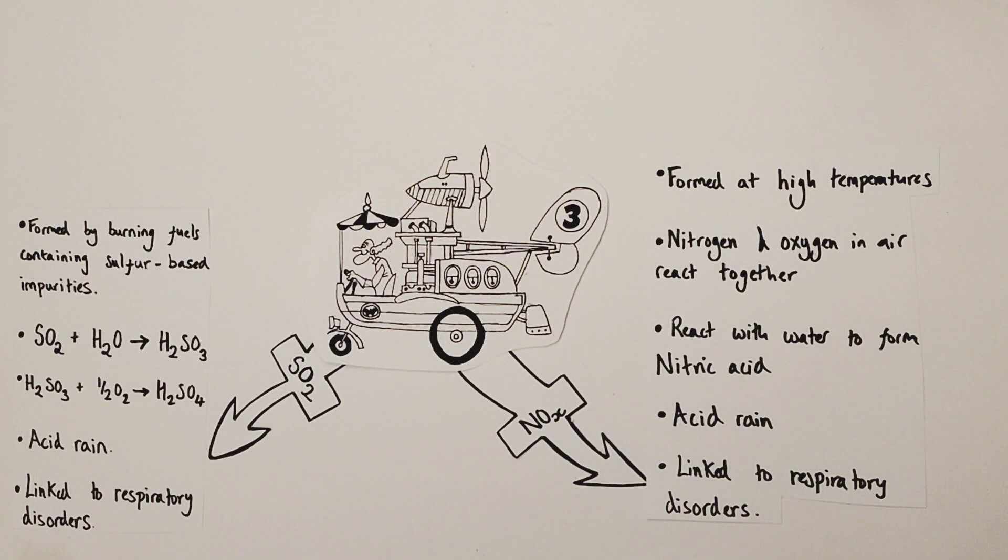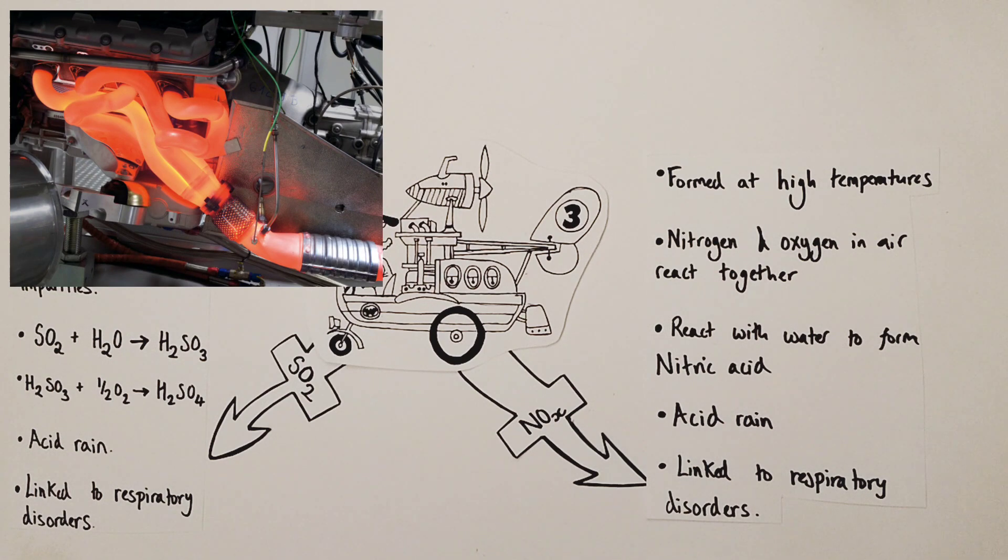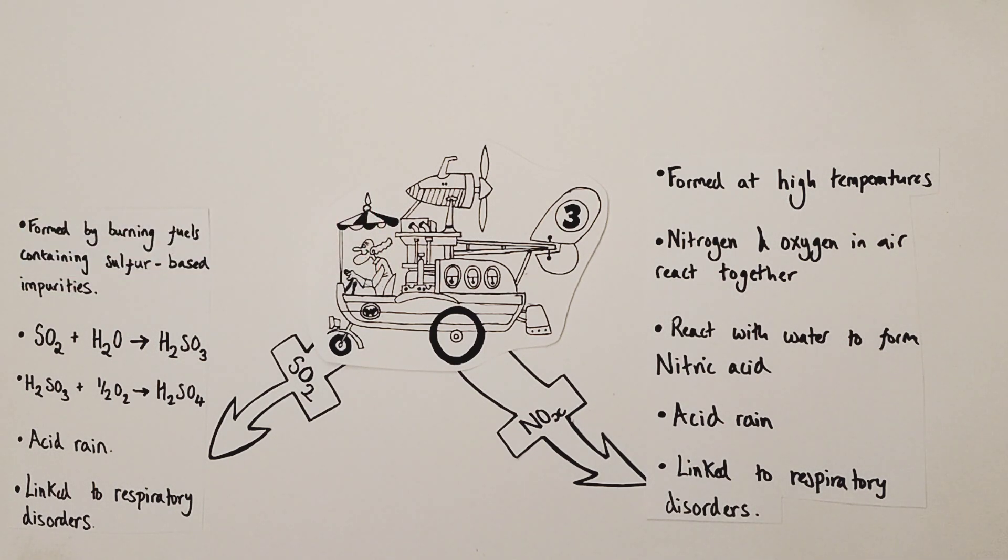Now the last of the pollutants is a little bit more interesting because it isn't formed directly via combustion reactions themselves. Instead it is formed by the high temperatures generated by the combustion reactions. So in those high temperature situations, for example, inside internal combustion engines, nitrogen and oxygen from the air will actually react together to form nitrogen oxides. That could be nitrogen monoxide, nitrogen dioxide. These nitrogen oxide gases will rise up through our atmosphere and react with water molecules found in clouds to form dilute nitric acid.